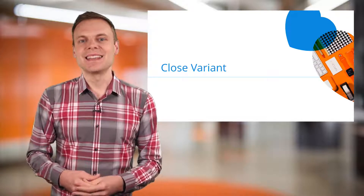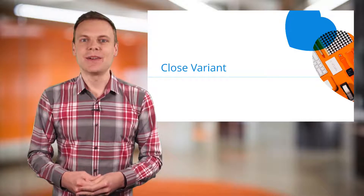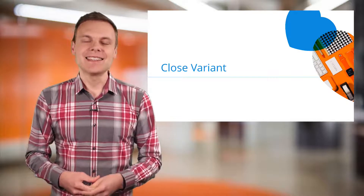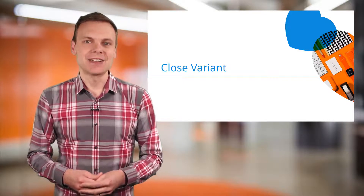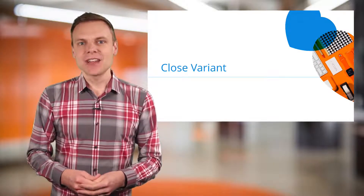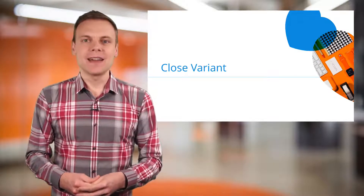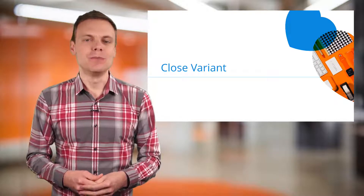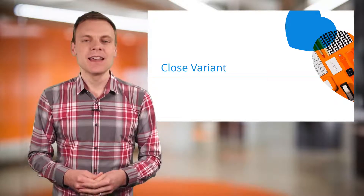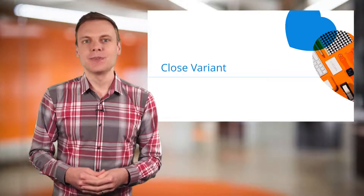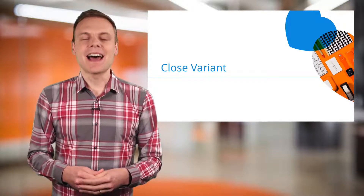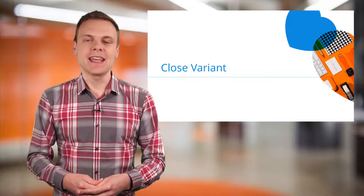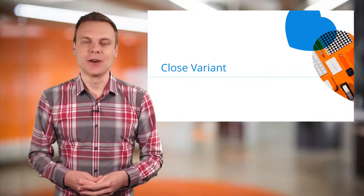Number 6 is Close Variant, which applies to phrase and exact match keywords. These match types will automatically show ads to people searching with misspellings, singular, plural and other close variations of the keyword we are bidding on.